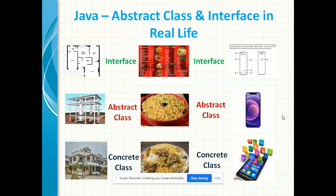The abstract class is incomplete or partially complete. By adding extra functionality into that building — like brick walls, wood works, tile work, and paintings — it will become a concrete class, a complete one which can be used by the customer or end user.